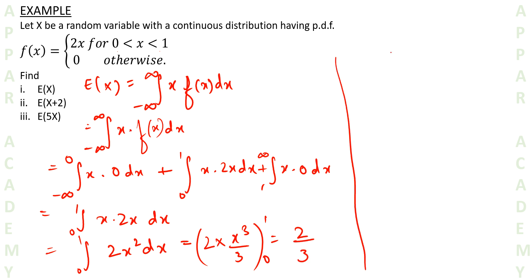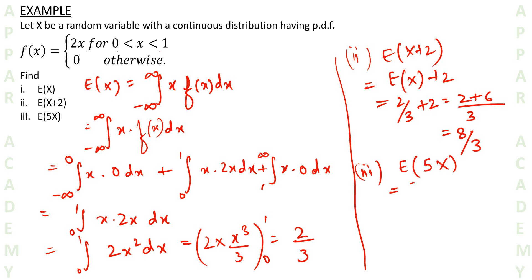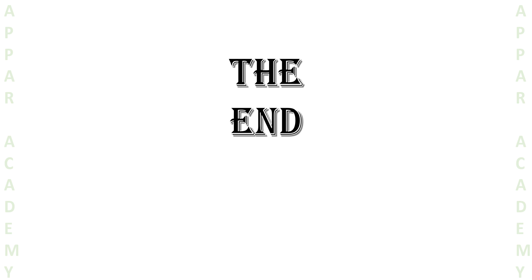For the second question, E[X + 2] = E[X] + 2 = 2/3 + 2 = 8/3. For the third question, E[5X] = 5·E[X] = 5·(2/3) = 10/3. This is how we generally find expectation for a continuous distribution and how we use the general properties to easily calculate things like E[X + 2] or E[5X]. I hope you liked this video. In our next video we will be talking about variance of the random variable. Thank you.